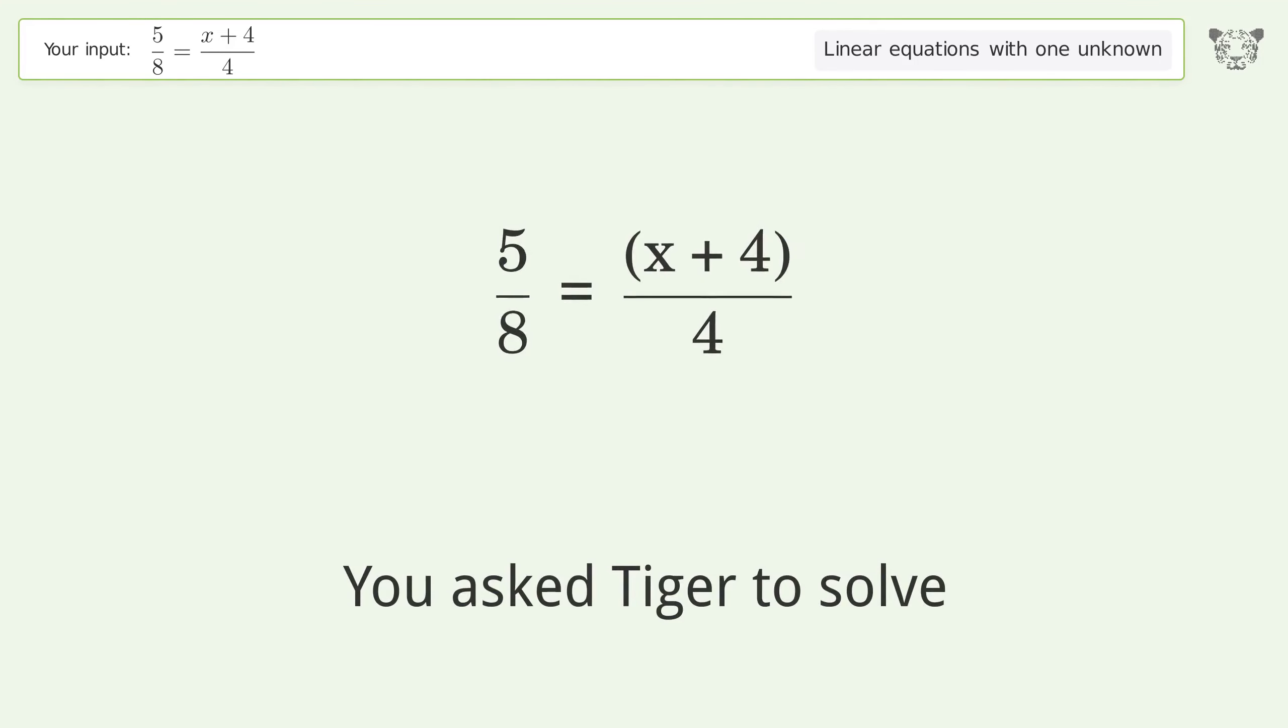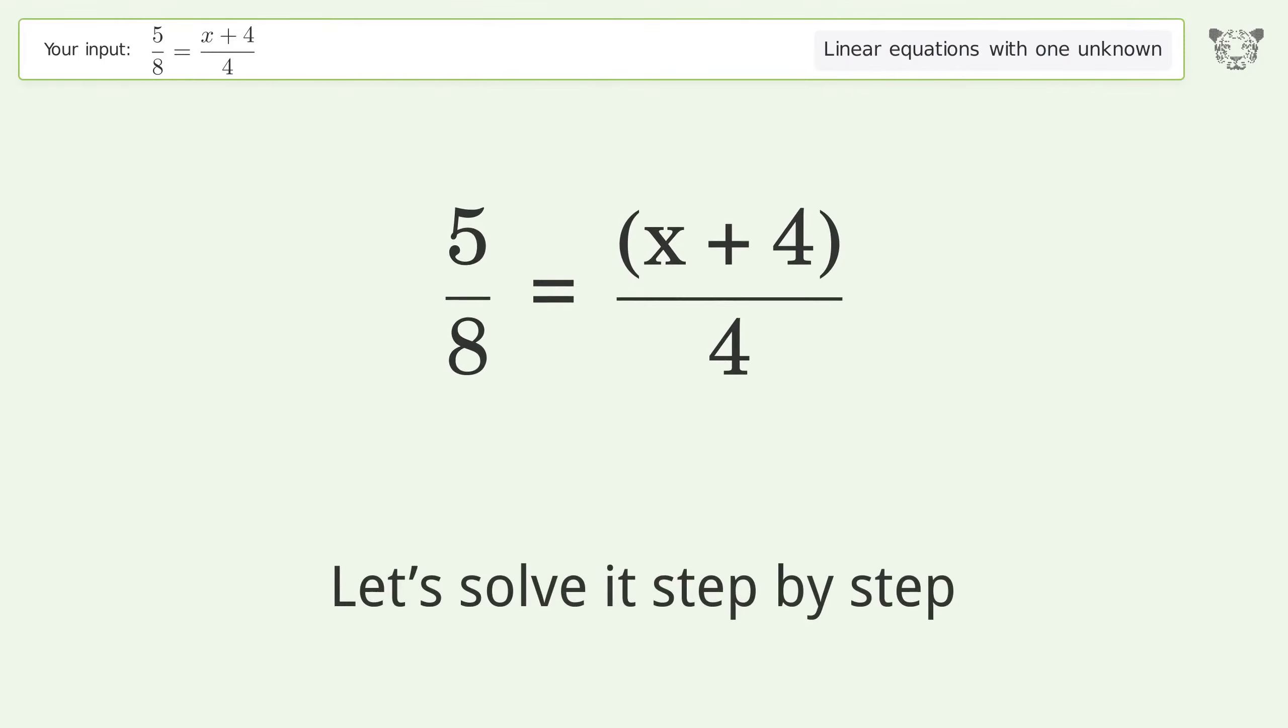You asked Tiger to solve this. It deals with linear equations with one unknown. The final result is x equals negative 3 over 2. Let's solve it step by step.